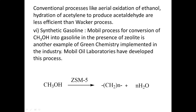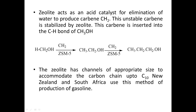Another application is synthetic gasoline. The Mobil process converts methanol (CH3OH) into gasoline in the presence of a zeolite catalyst — for example ZSM-5. This is an example of green chemistry implemented in industry. Zeolite acts as an acid catalyst for elimination of water from methanol to produce carbene (CH2). This unstable carbene is stabilized by the zeolite and inserted into the C–H bond of CH3OH, extending the carbon chain.